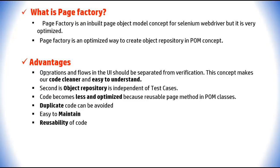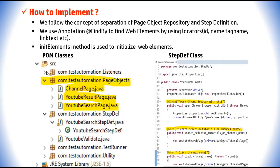The object repository is independent of test cases. Code becomes less and more optimized because of reusable page methods in the page classes. All action methods are implemented in corresponding page classes. Duplicate code can be avoided. It is easy to maintain with separate page object repository and step definition files, and reusability of code is higher.